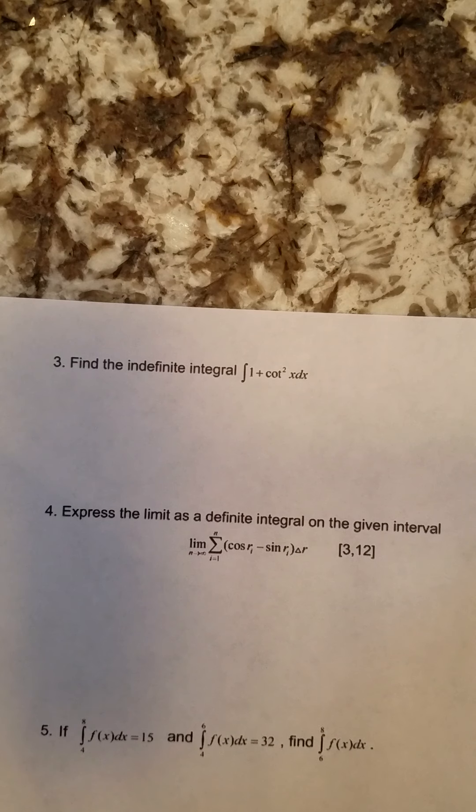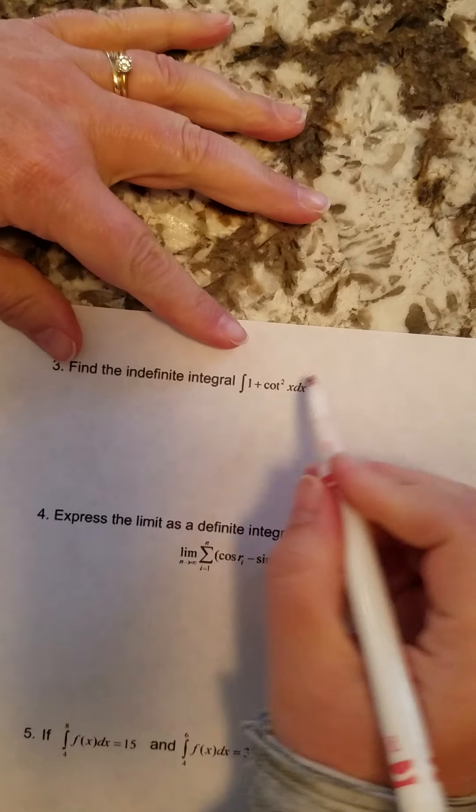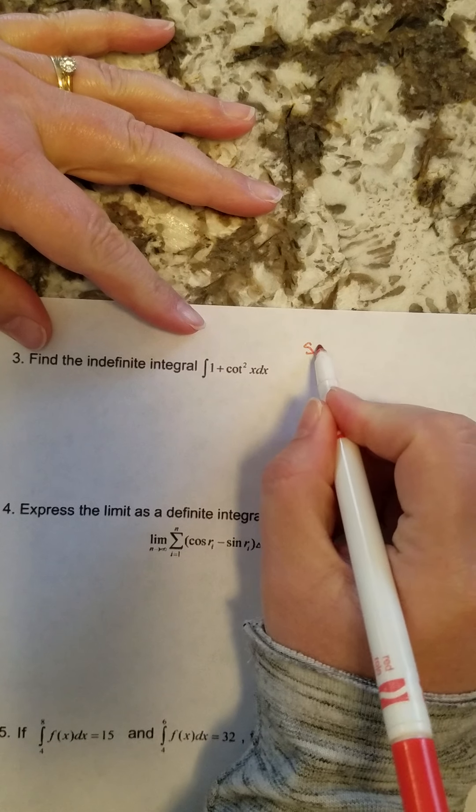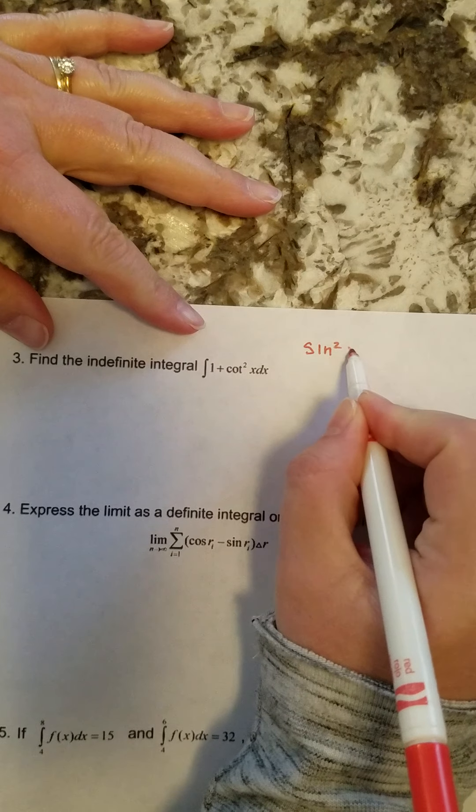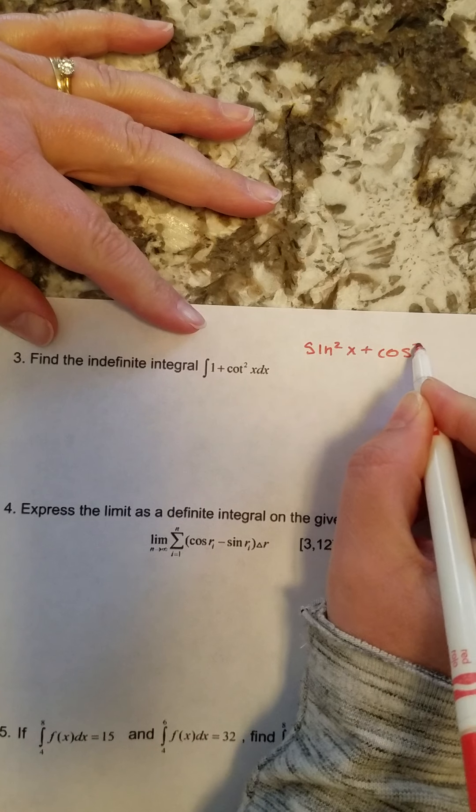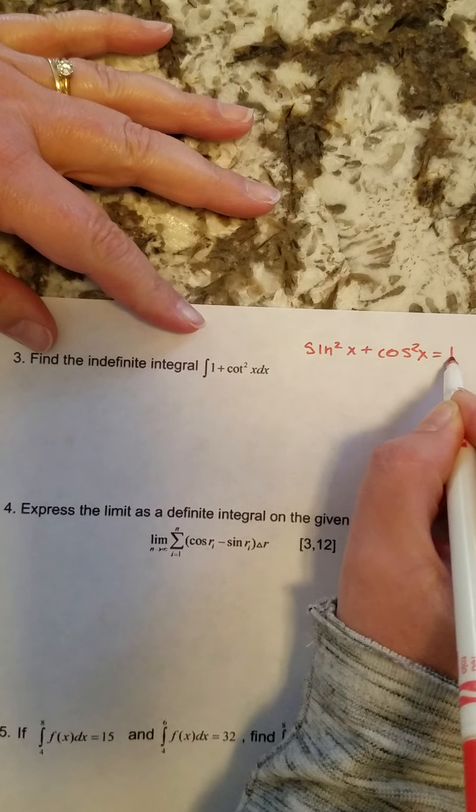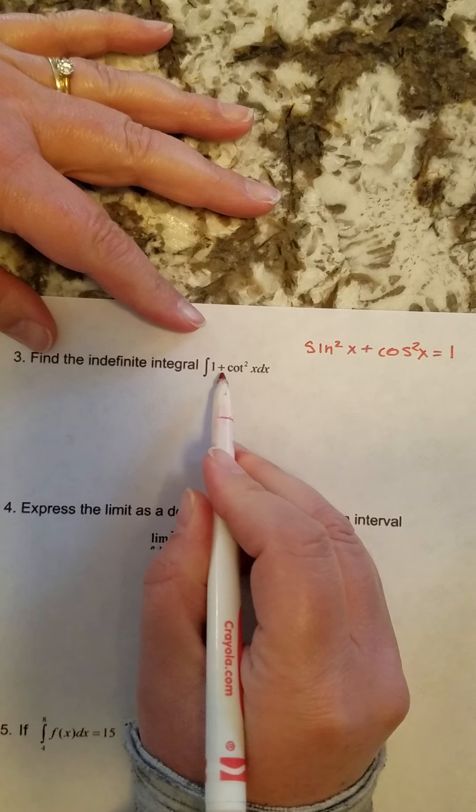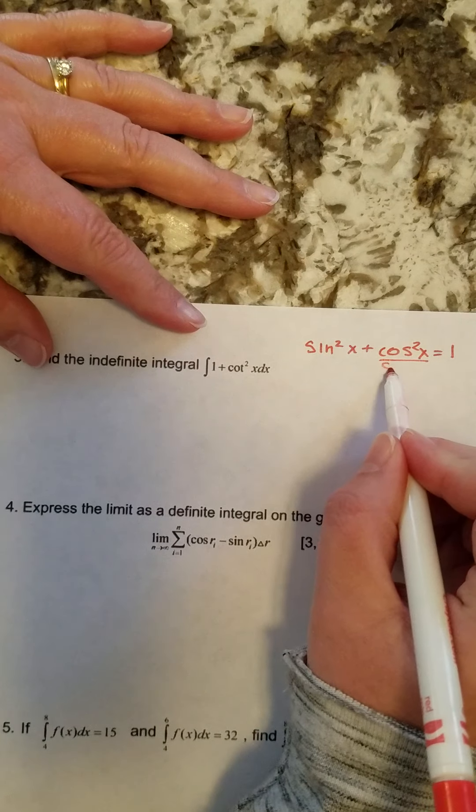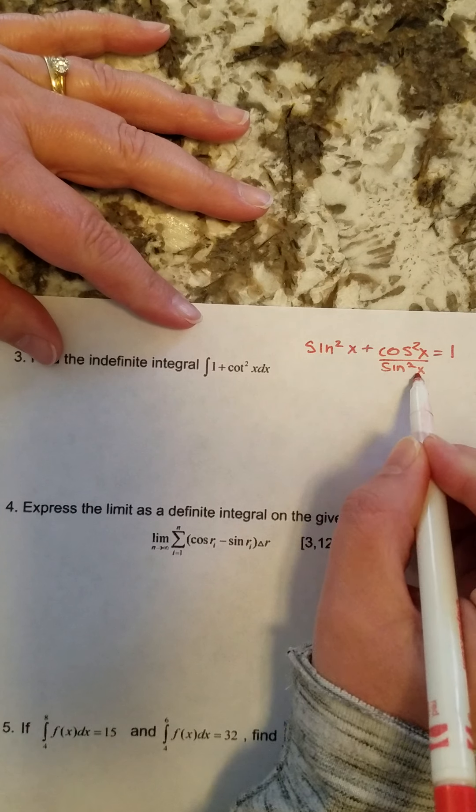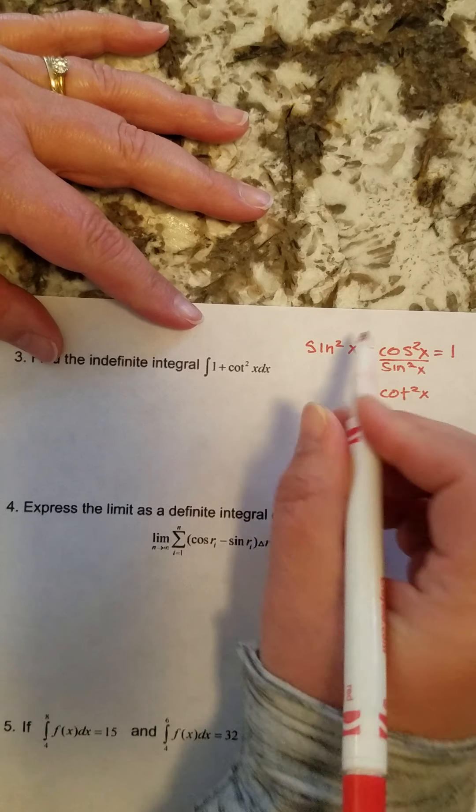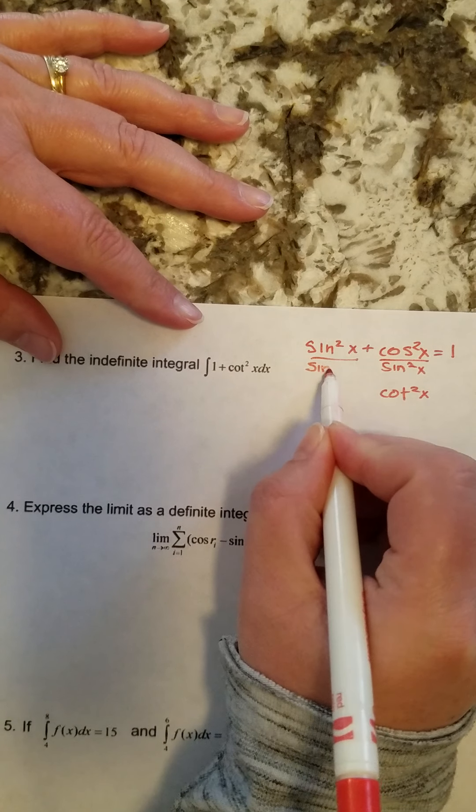Whenever I see 1 plus a trig function squared, I do ask myself, does this by chance in any way relate to my Pythagorean identity? My sine squared plus cosine squared equals one. Is there any way I can change this into cotangent squared? Yes, if I divide this by sine squared right here, then I'm going to get a cotangent squared for that term. But that means I have to divide every term by that.